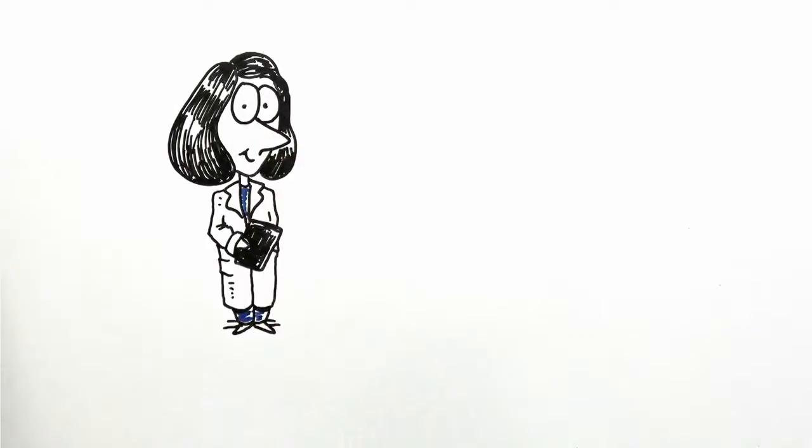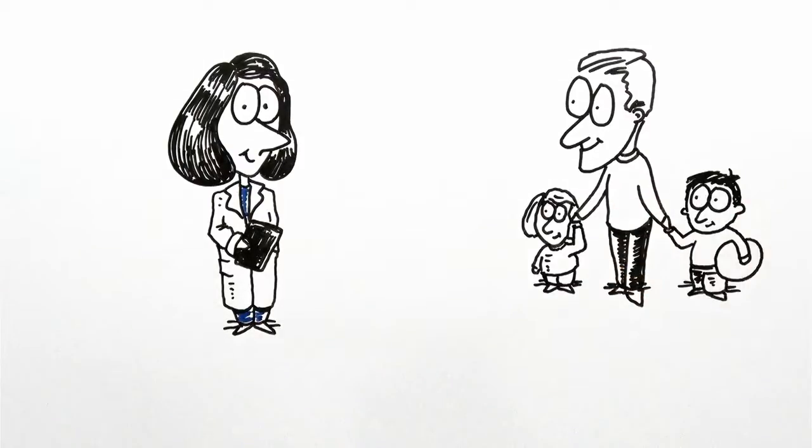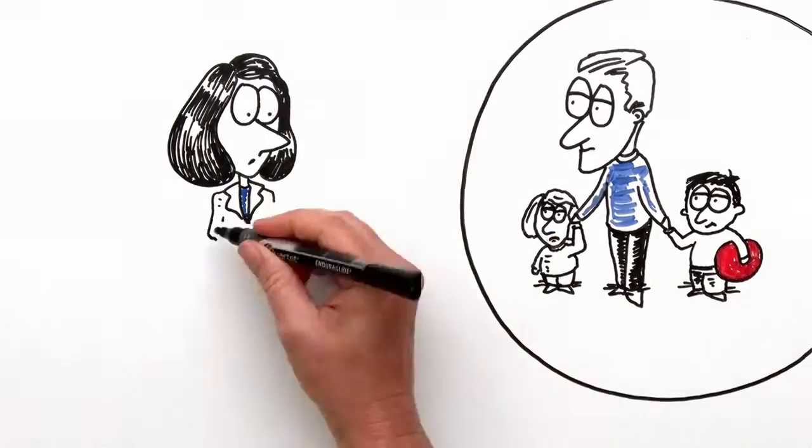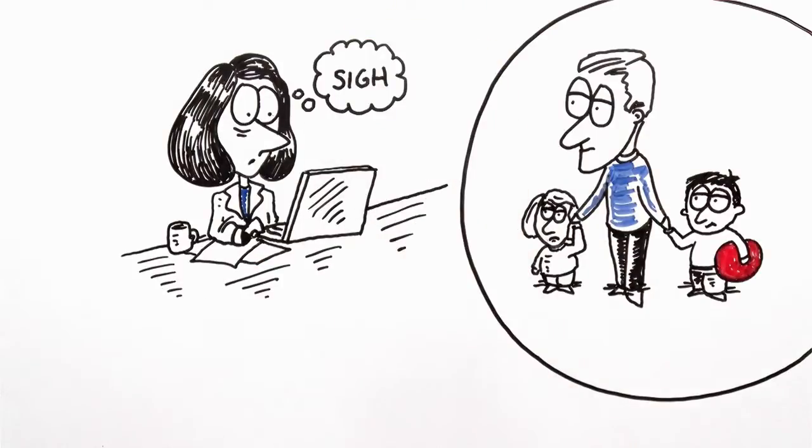Meet Meredith. Meredith loves kids and always wanted to become a doctor in private practice. Now, she's an independent pediatrician with her own kids at home, but she doesn't have a lot of time to see them since she has to stay late at the office to finish her charts every night. Meredith wishes it could be different.